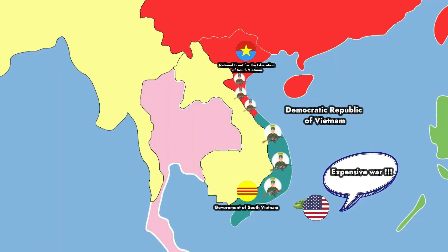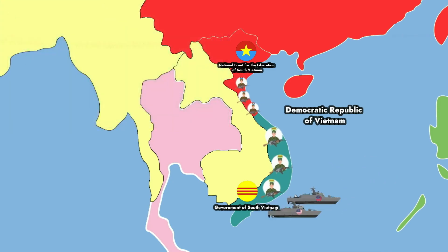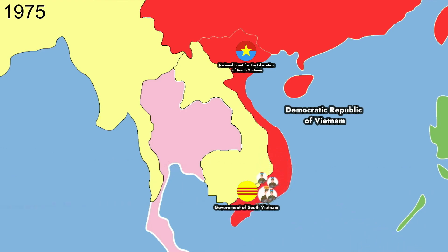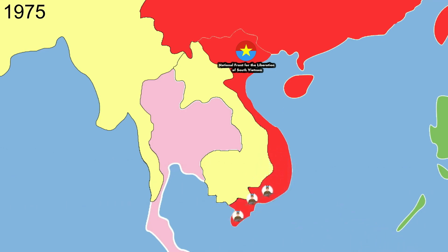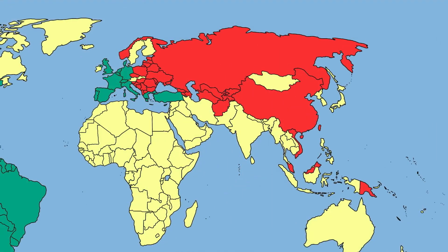America spent hundreds of billions of dollars on this war, making it one of the most expensive wars in history. Within the U.S., the wave of protest against the war increased and public opinion became increasingly bitter. When realizing the war was taking place in an unexpected direction, the U.S. decided to withdraw in 1973. Two years later, the communists won and Vietnam was reunified.